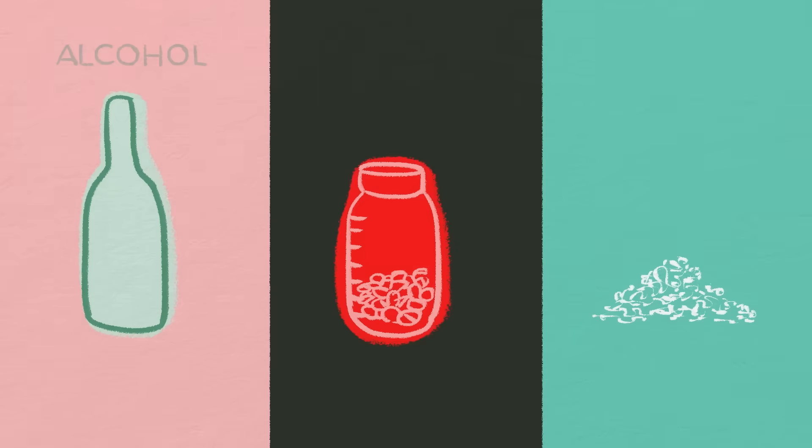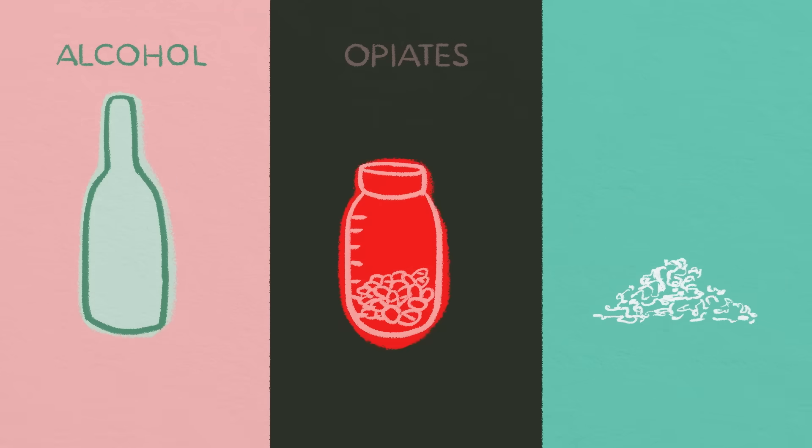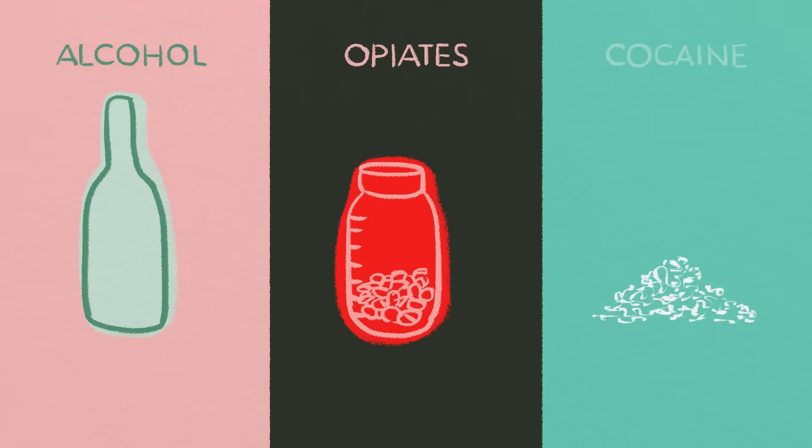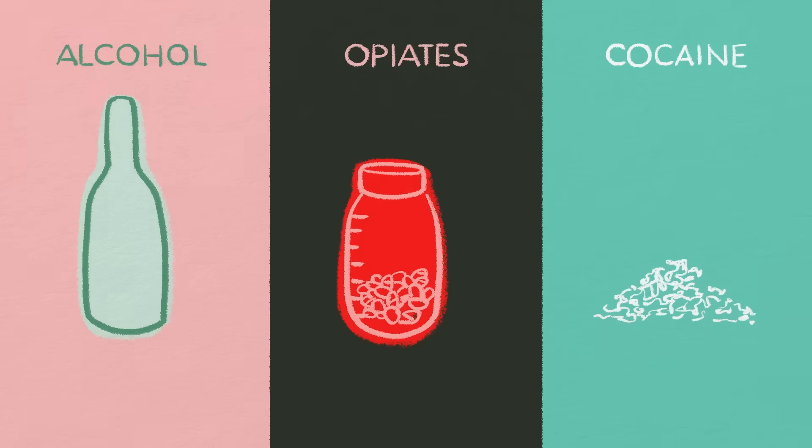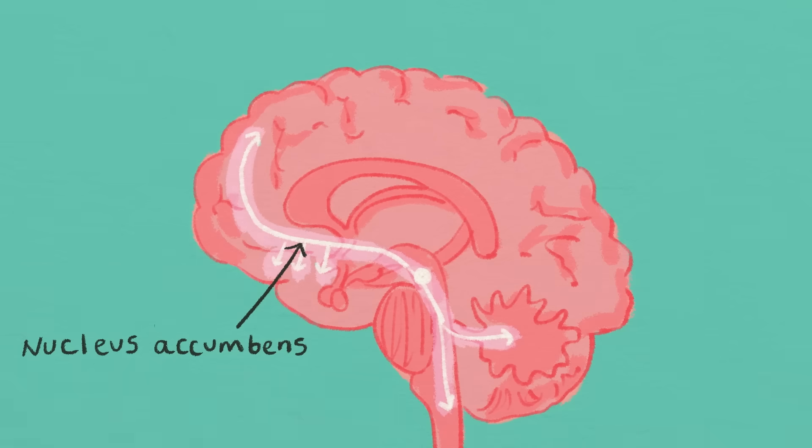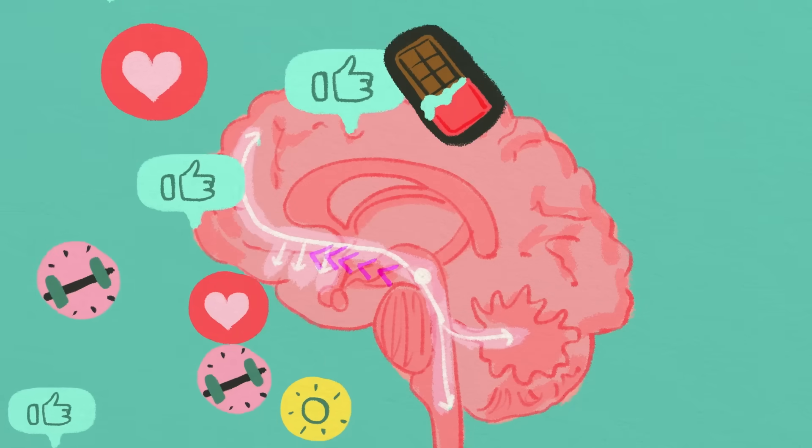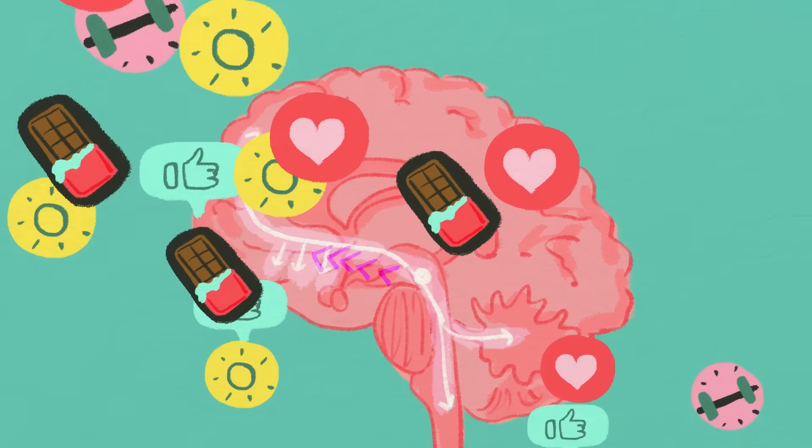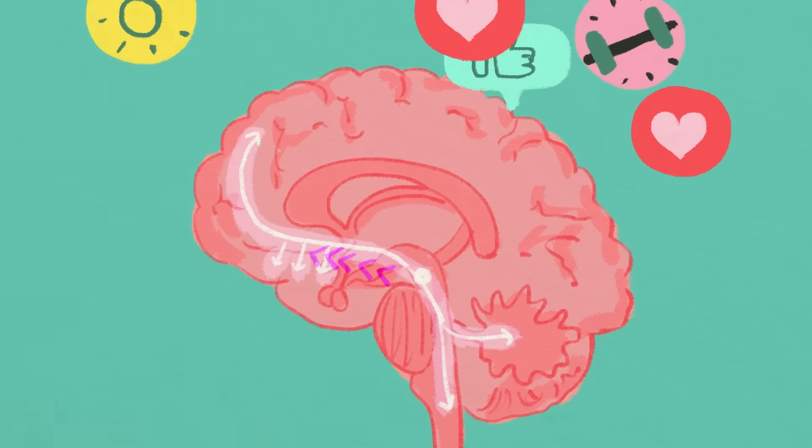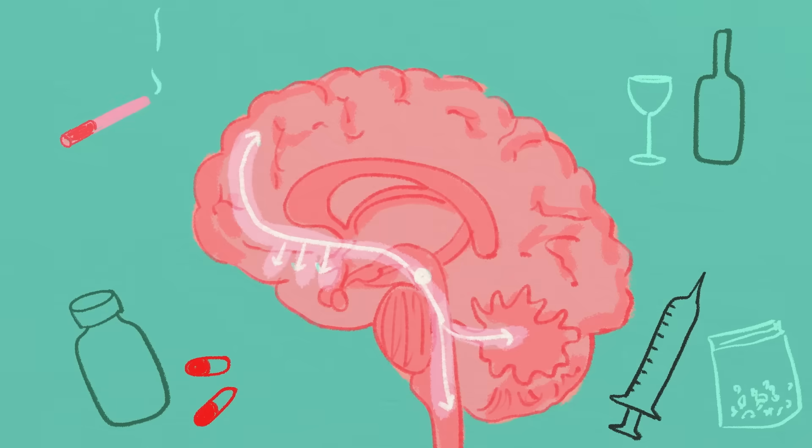In addition to the unique effects each addictive substance has, all of them alter the release of dopamine in a brain region called the nucleus accumbens. This area is part of the brain's reward pathway, which is sensitive to experiences that give us pleasure and drives us to repeatedly seek them out. The reward pathway is essential to our well-being, but addictive substances also exploit it.